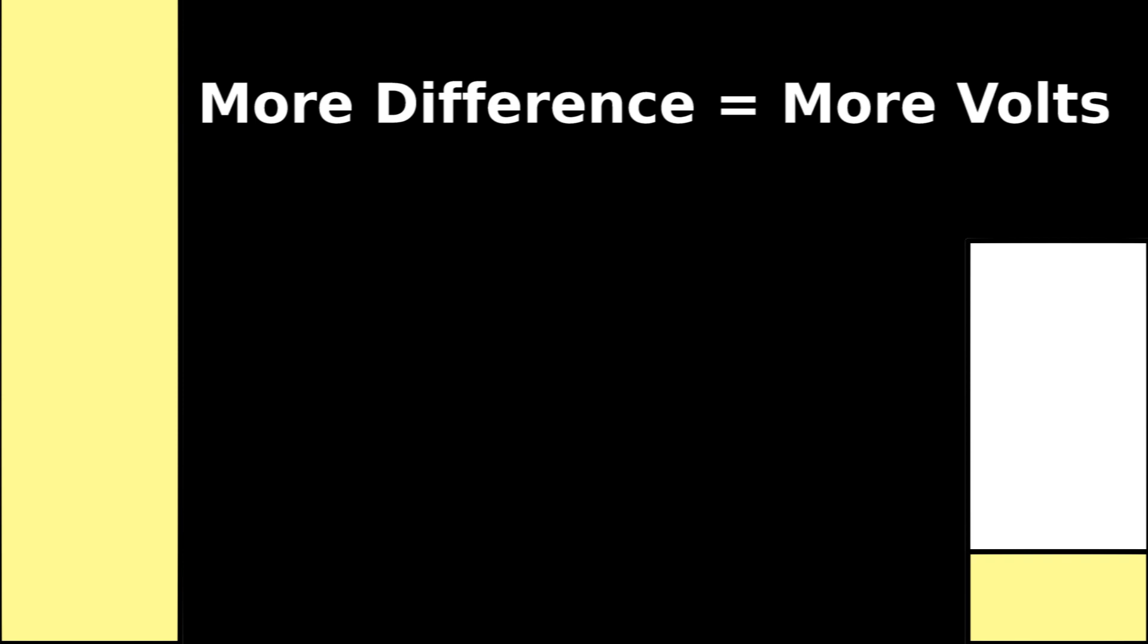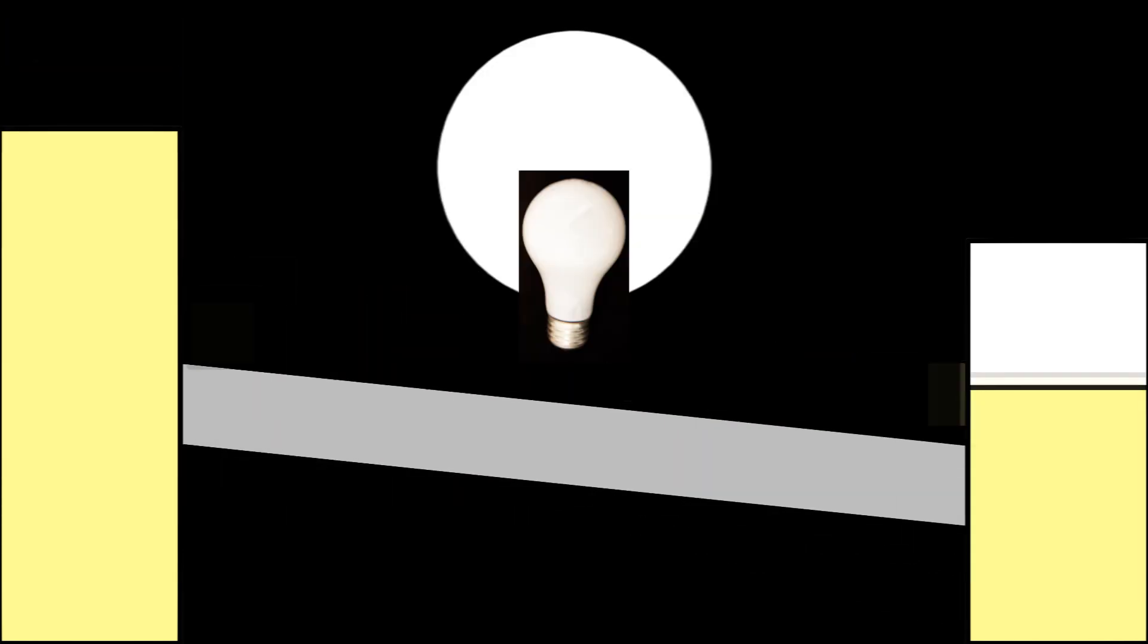If there are more electrons on one side, thus a greater voltage, the electrons will flow faster, giving off more light.